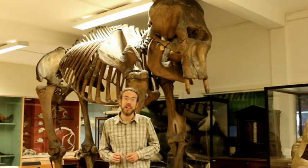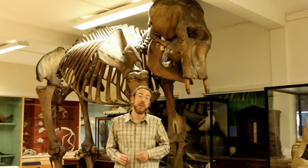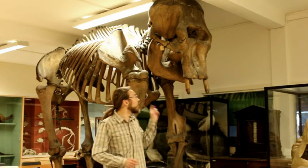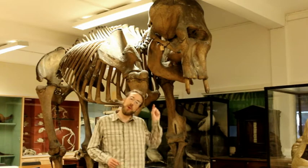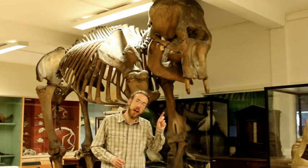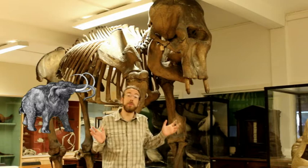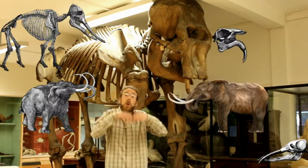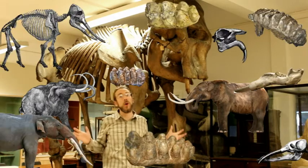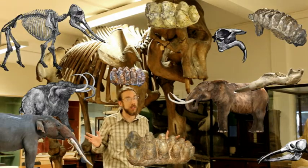For example, if you look at elephants today, there are only three species — this one and two others in Africa. But what about the mammoth, or the mastodon, or all the other 180 others?